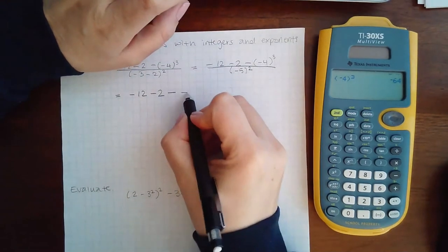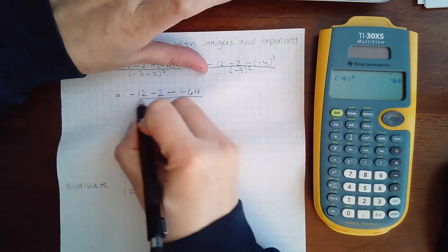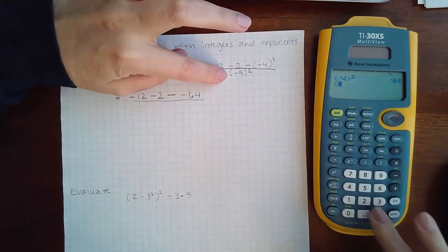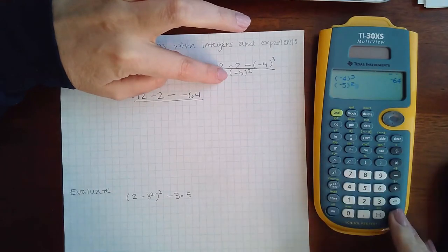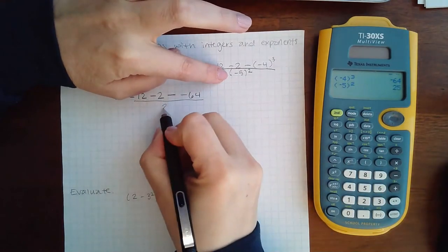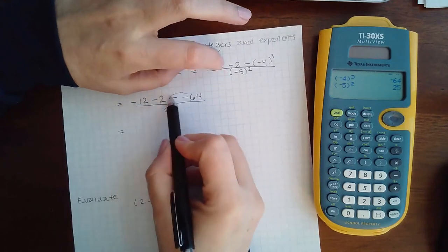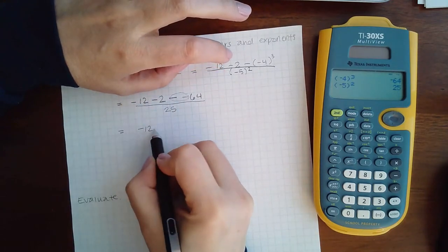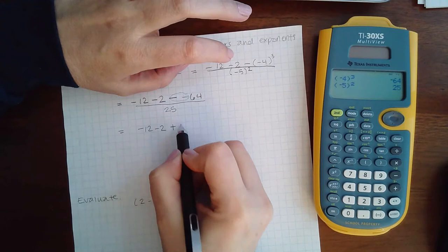So I get negative 64. Then at the bottom, parentheses, negative 5 squared is positive 25. Now I do have a double sign here. So I'm going to take care of that. It's going to be plus 64.